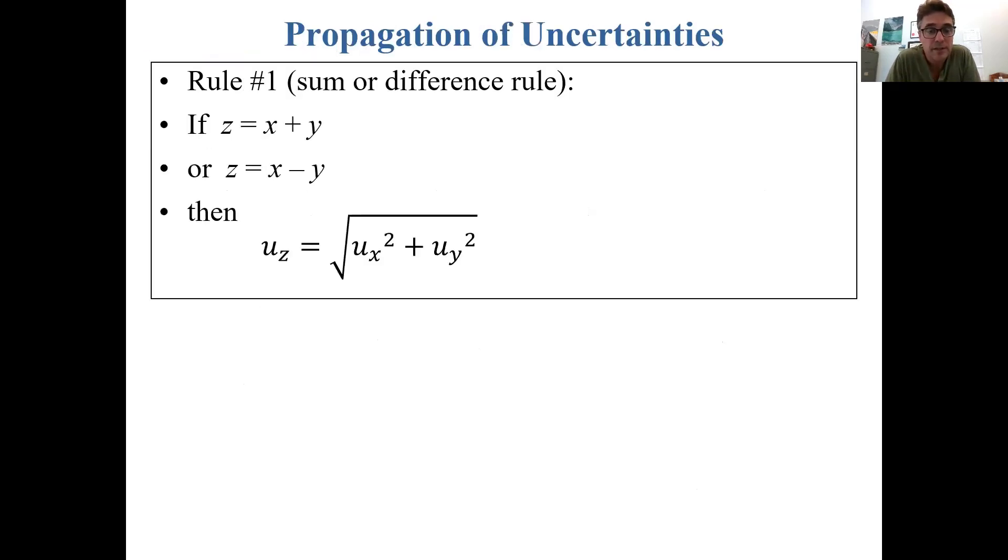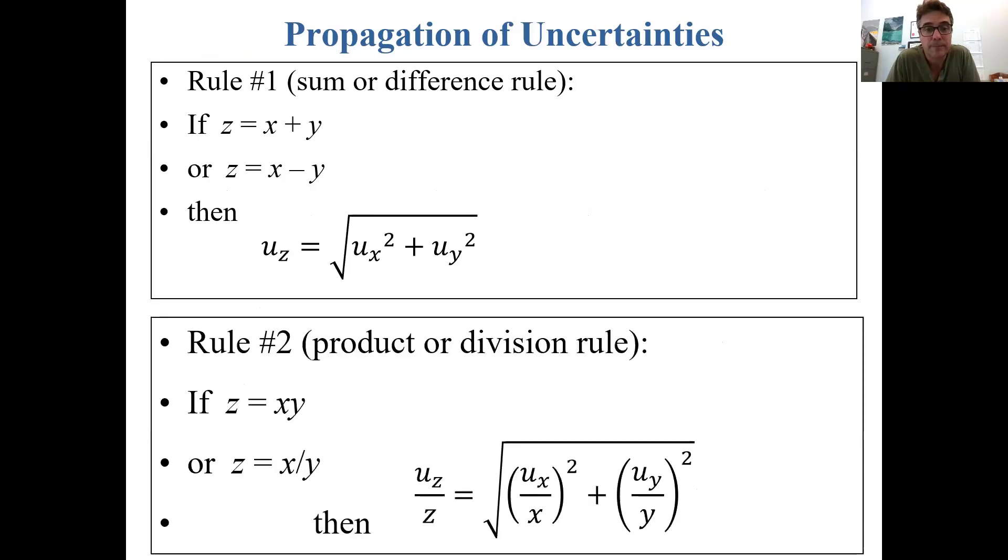Rule number one is the sum or difference rule. If some number z is x plus y or x minus y, then the uncertainty in z is the square root of the sum of the squares of the uncertainties of x and y. If you're multiplying two numbers, so z is x times y, or if you're dividing, z is x divided by y, then the fractional uncertainty in z is equal to the square root of the sum of the squares of the fractional uncertainties of x and y.